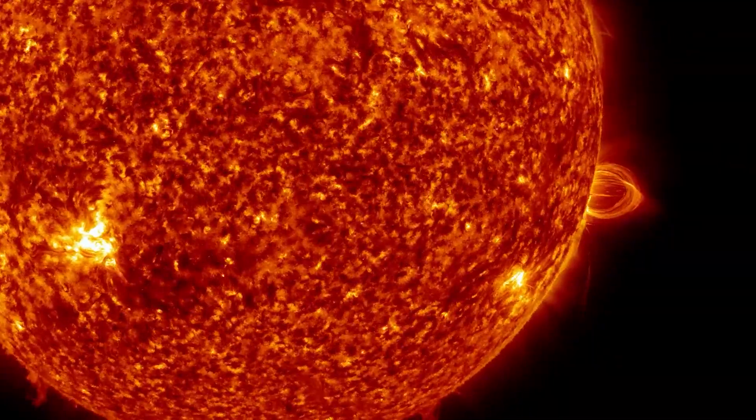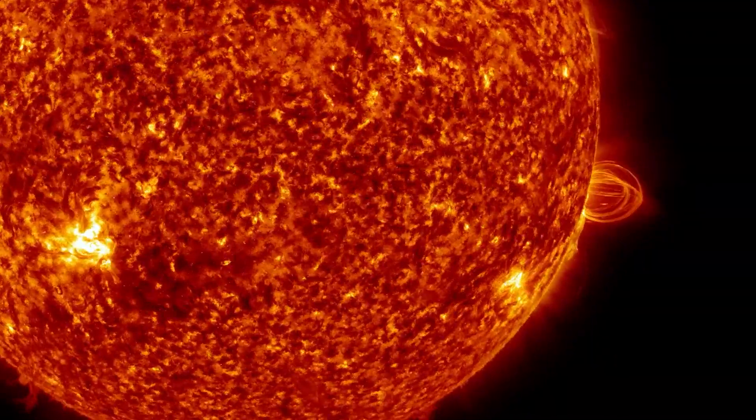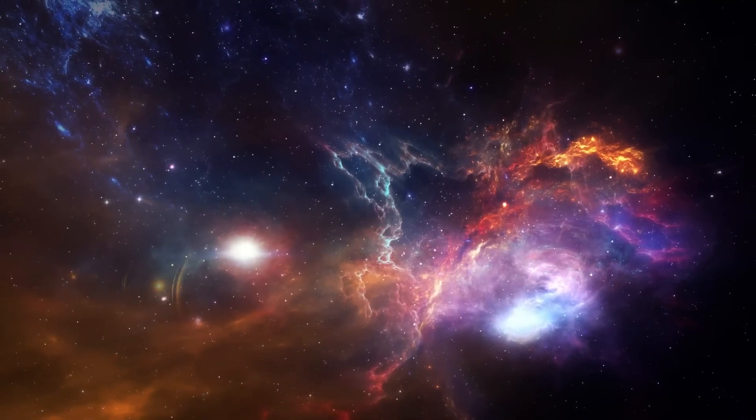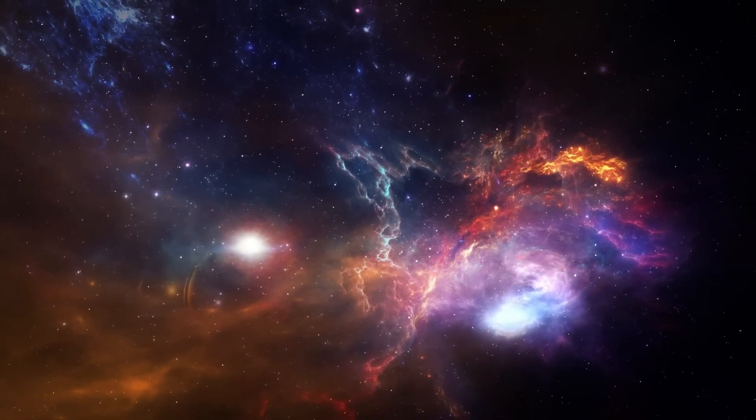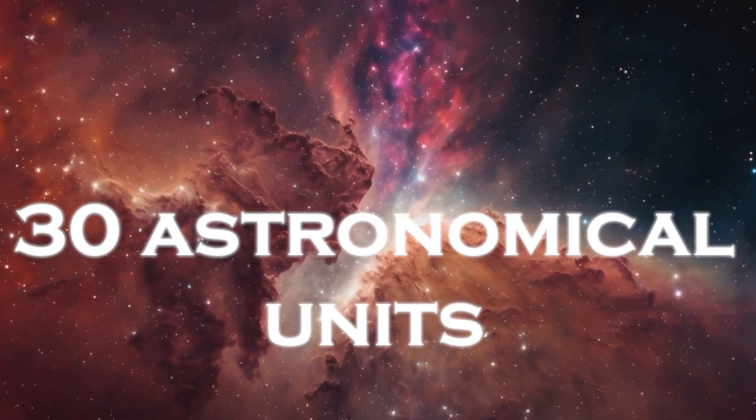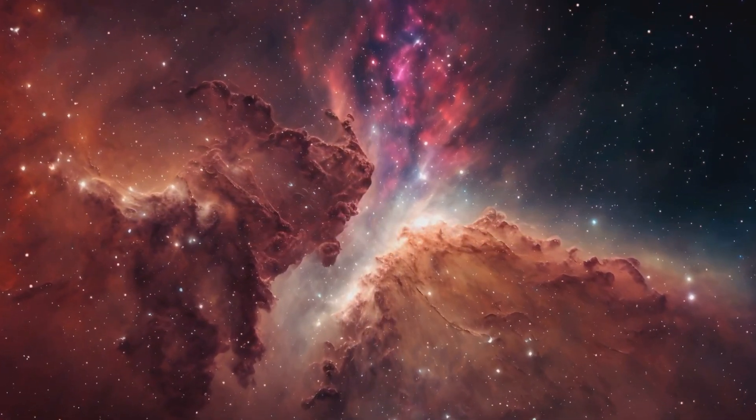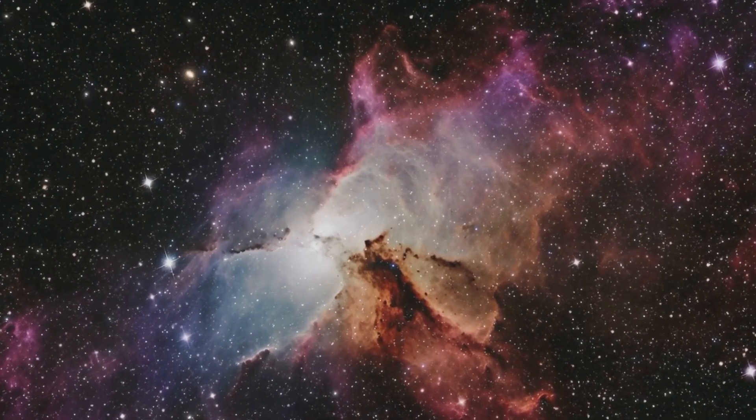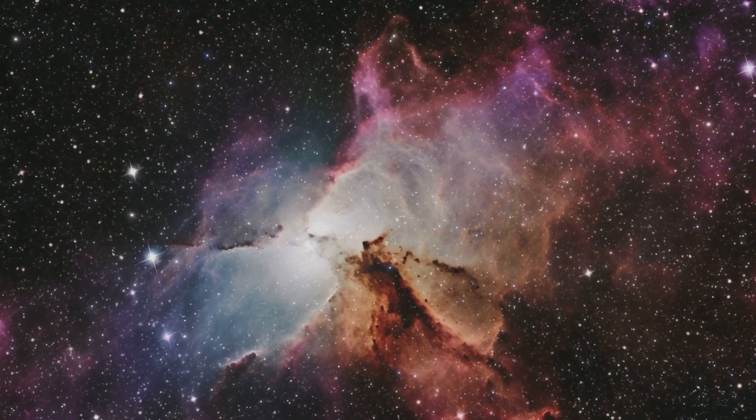Betelgeuse loses about one solar mass every 10,000 years, ejecting materials evenly in all directions, forming a nebula around it. This nebula has a diameter of 30 astronomical units, which is 30 times the distance between the Earth and the Sun, and is 250 times larger than that star itself.